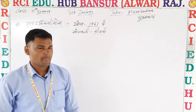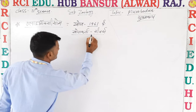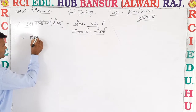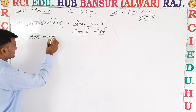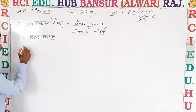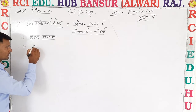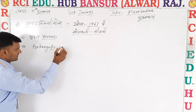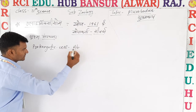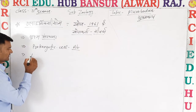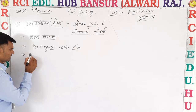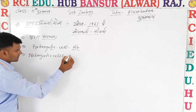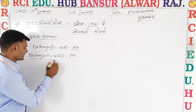Glyoxysome is a suksham kaya — it is a microbody. It is absent from prokaryotic cells and also absent from plant cells.